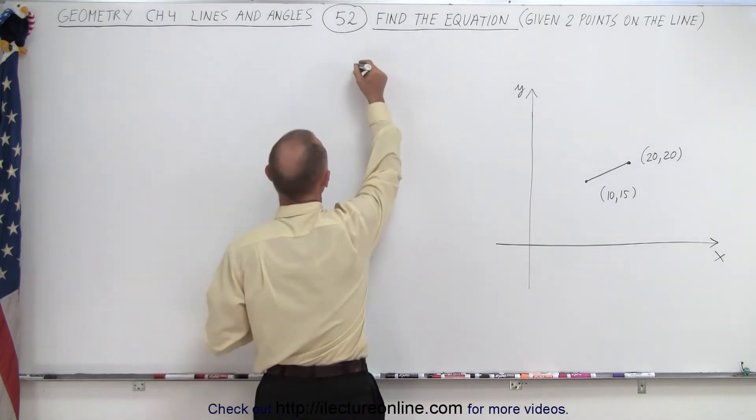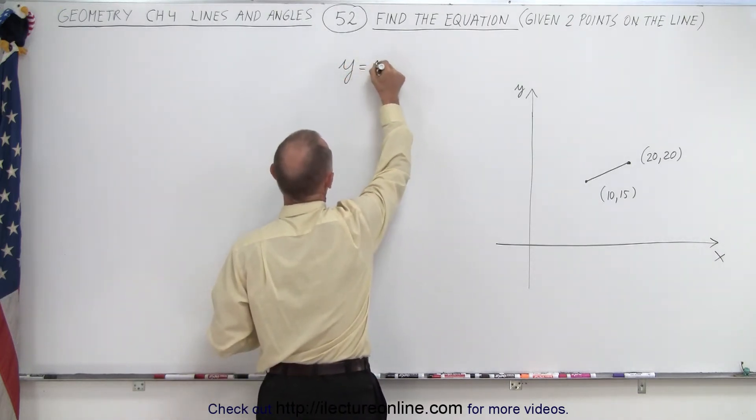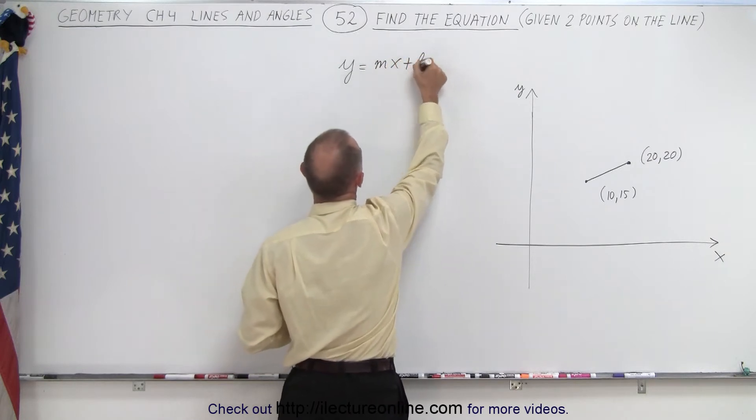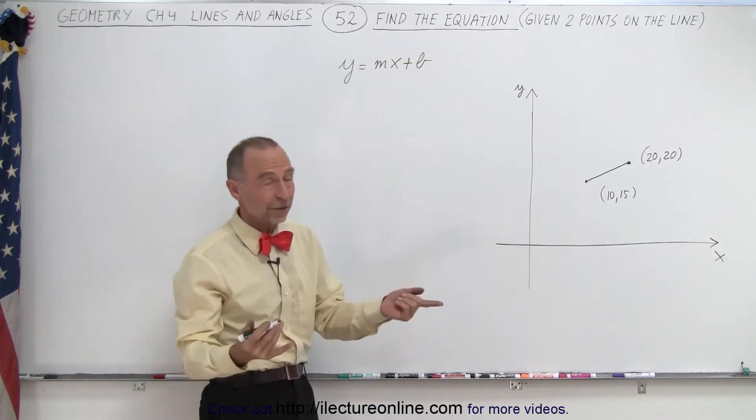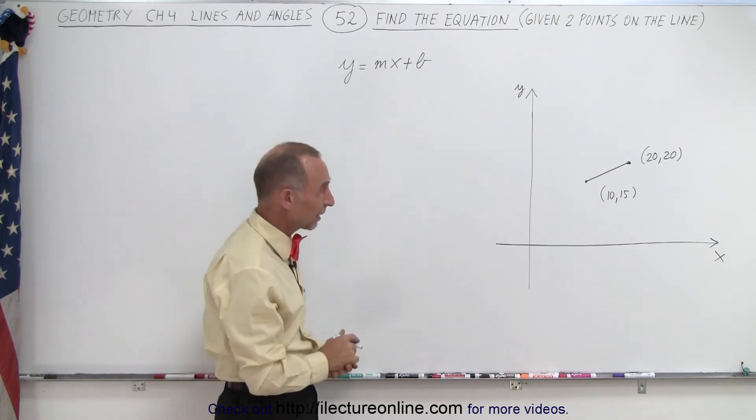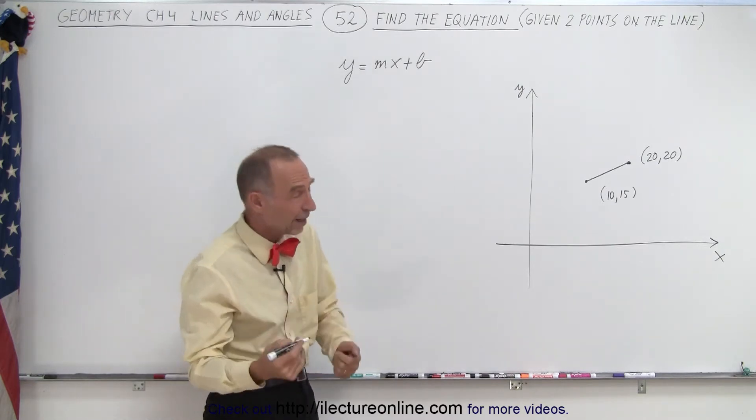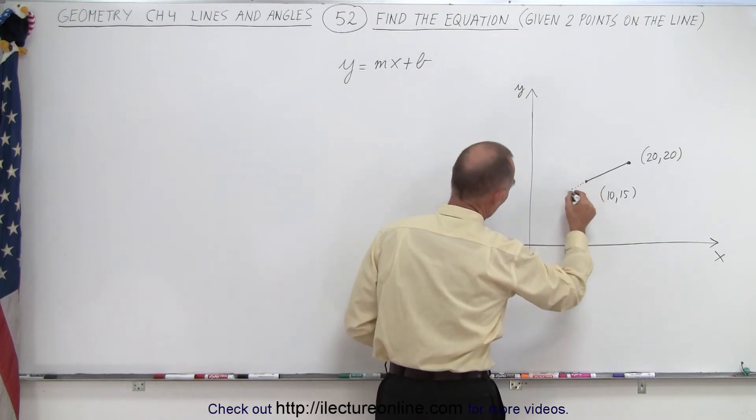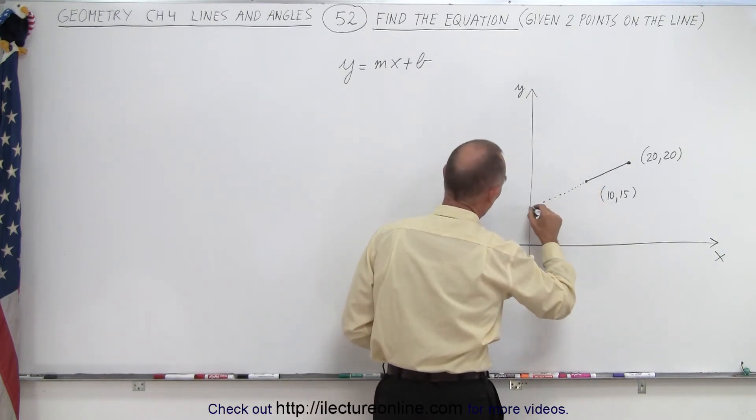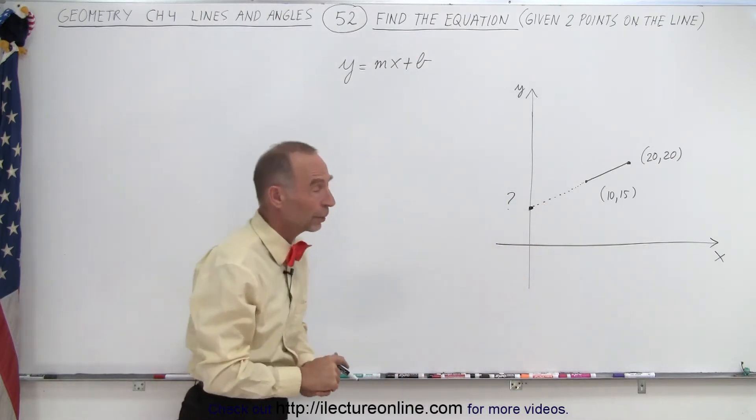You still know that the equation is going to look like this: y equals mx plus b, where m is the slope of the line and b is the y-intercept. But here you can see that with the segment of the line that's drawn, you can't really tell where the y-intercept is going to be. You know it's going to be here somewhere, but the question is, where is that point? You don't know. You were not told what that point is.